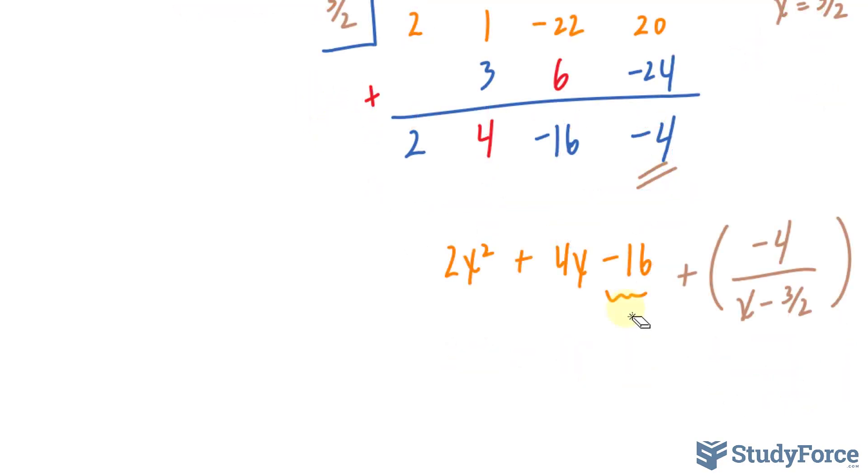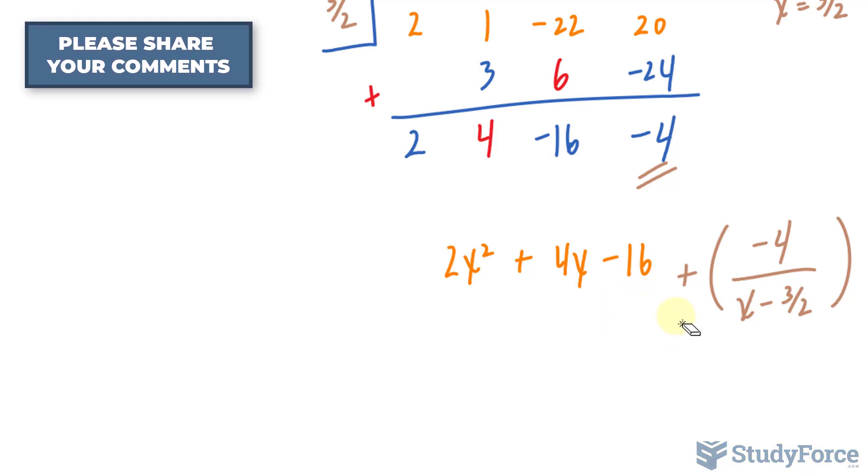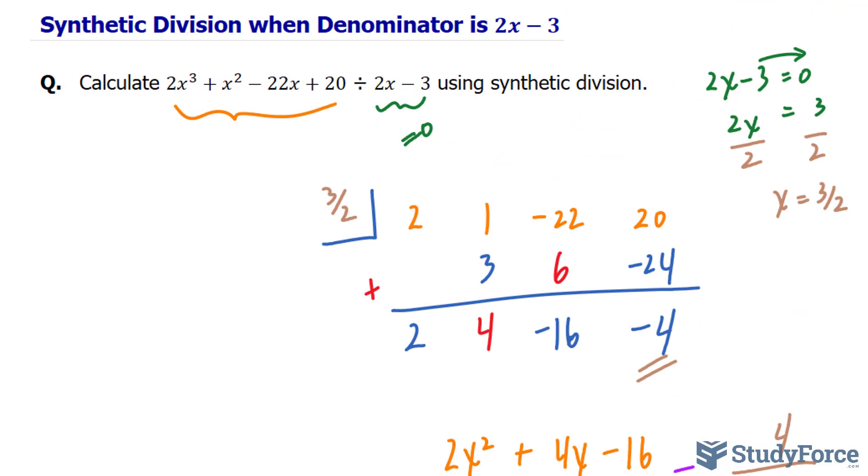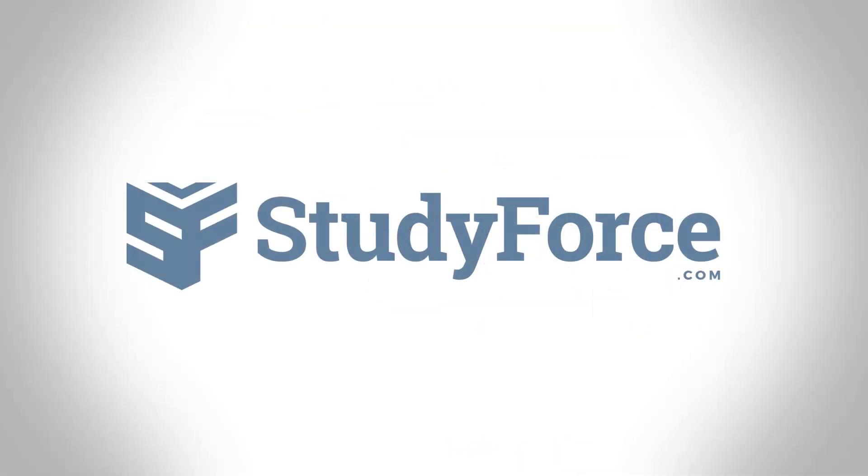If you have this question in your textbook, the answers in the back might even write it out without these parentheses, that negative would be placed right here, and you don't need the parentheses either. And there you have it. That is how to synthetically divide when the denominator is 2x minus 3.